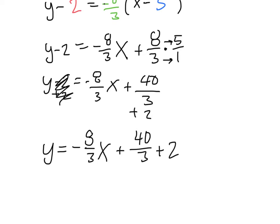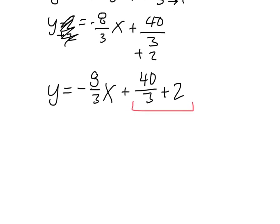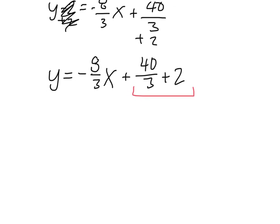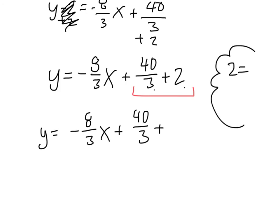y equals negative 8 over 3x plus 40 over 3 plus 2. It's getting tricky. We have a fraction plus a number. We've all done this before, we can do it one more time. What's the first thing you want to do? Get a common denominator. So y equals negative 8 over 3x plus 40 over 3 plus, 2 is equal to 6 over 3. Remember, because I just multiplied the top and the bottom by 3. 3 times 2 is 6, 3 times 1 is 3. So plus 6 over 3.